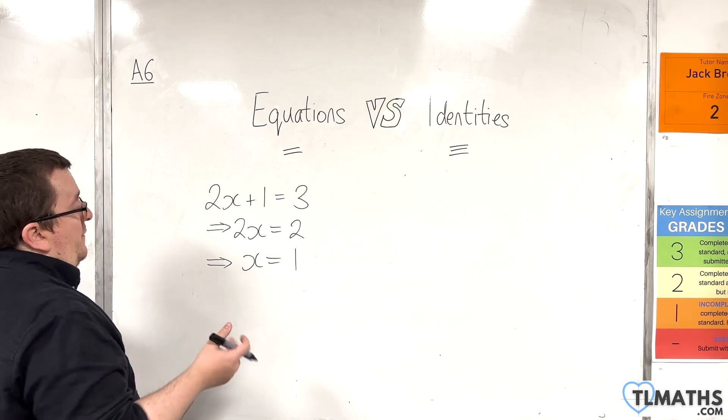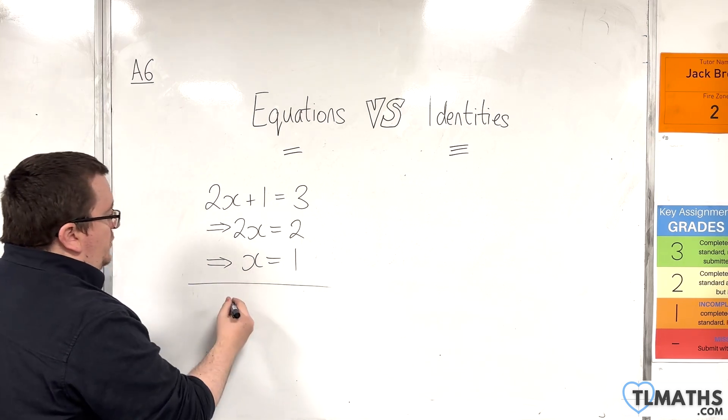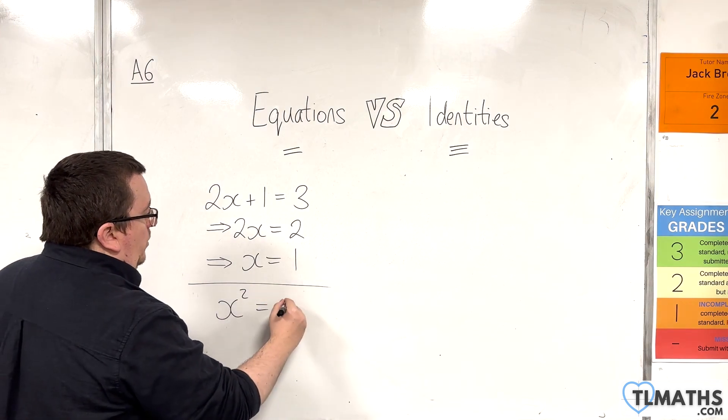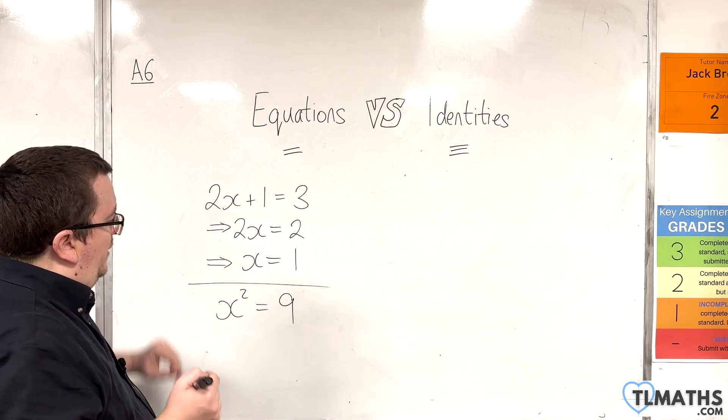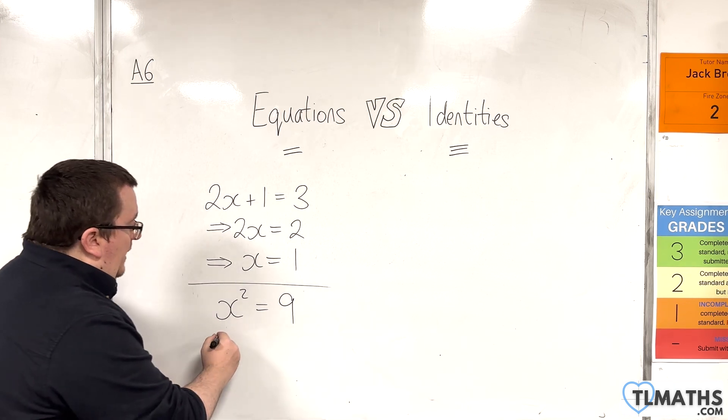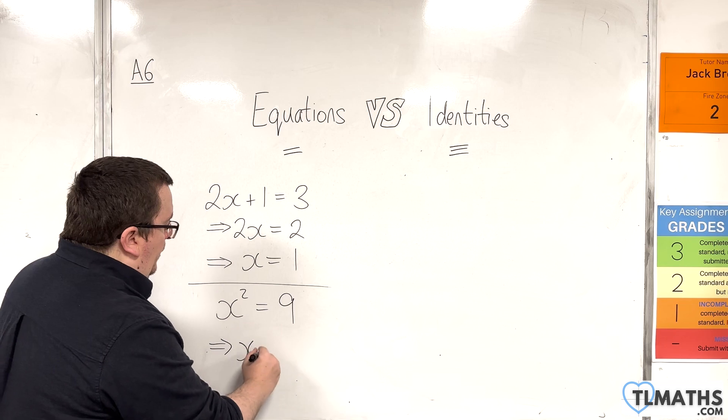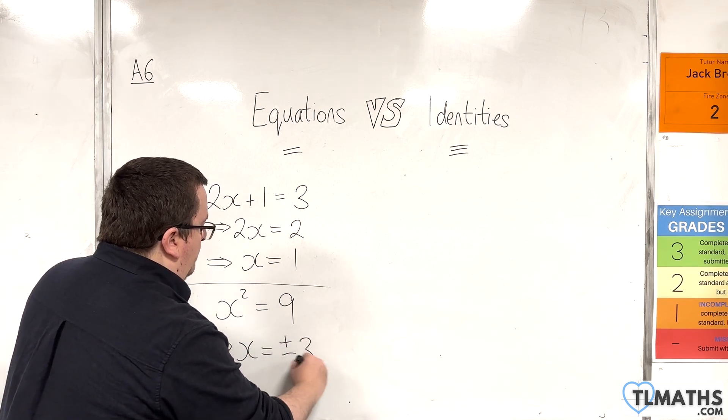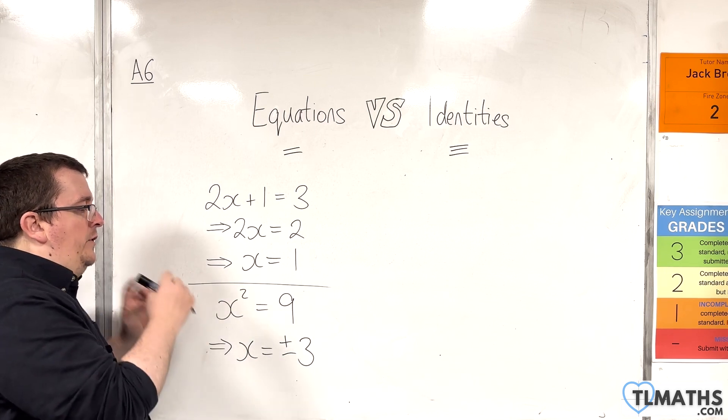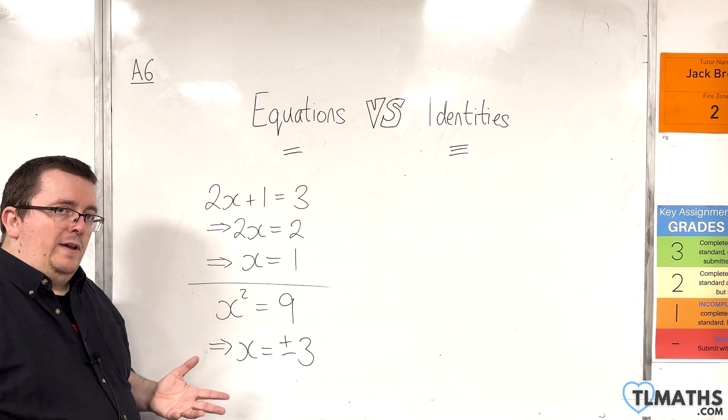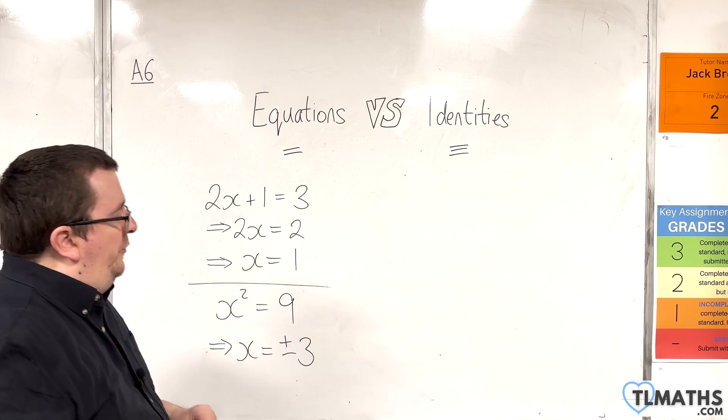We could have another example where we looked at the equation x² = 9. Now this equation has two solutions because x can either be plus or minus 3. If you square 3, you get 9. If you square minus 3, you get 9. So that's got two solutions.